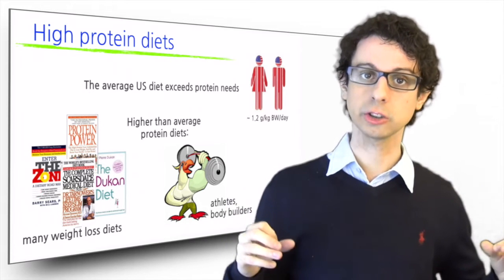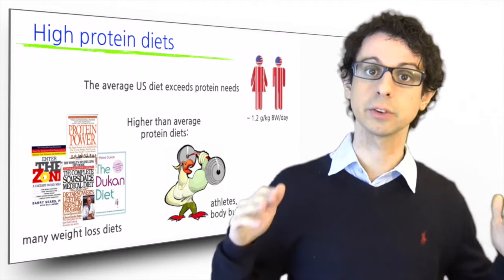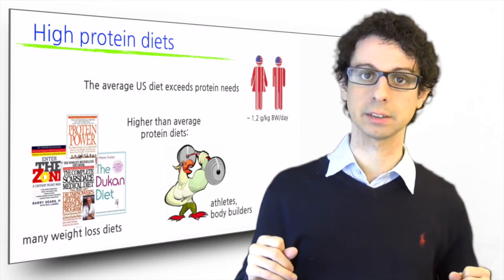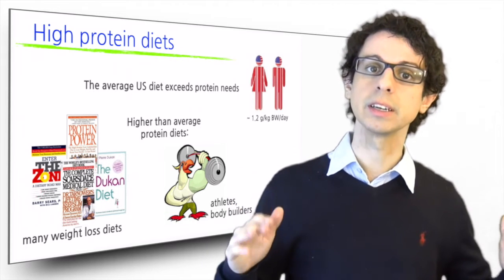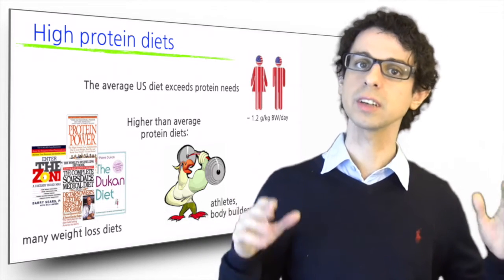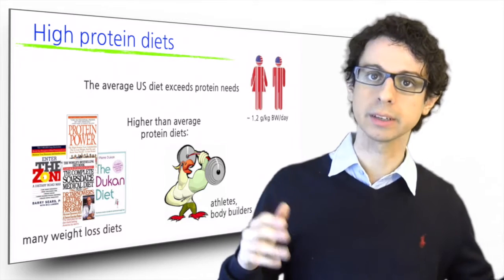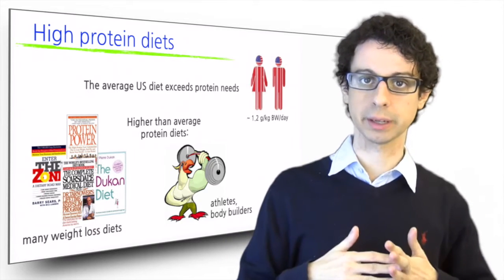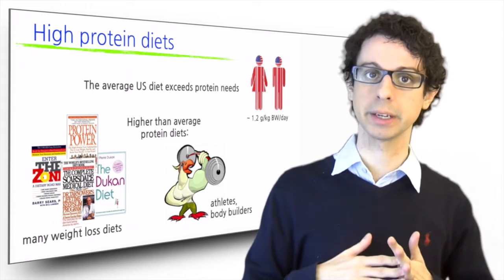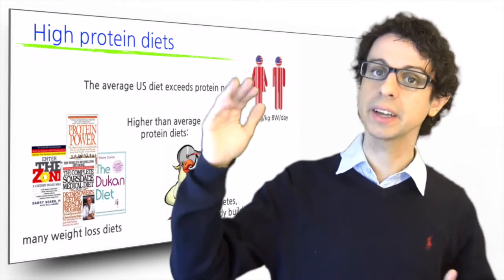The DRI say that no additional dietary protein is suggested for healthy adults undertaking resistance or endurance exercise. So their need for protein is the same as every other healthy adult. Other institutions agree that athletes need more protein, some say 0.9 grams per kilo, some 1.2 grams per kilo, some 1.5 grams per kilo, but anything above that is wasted.